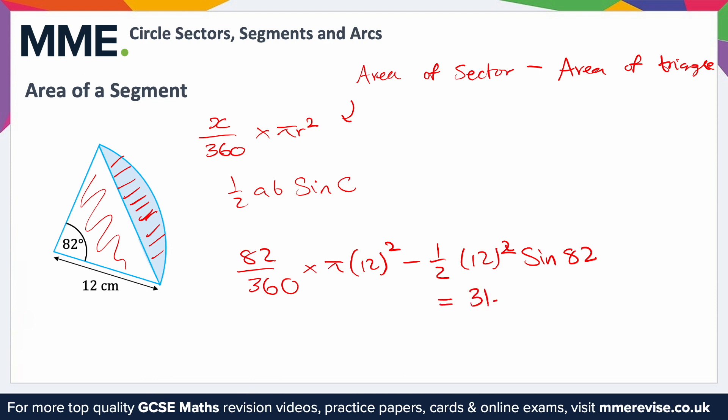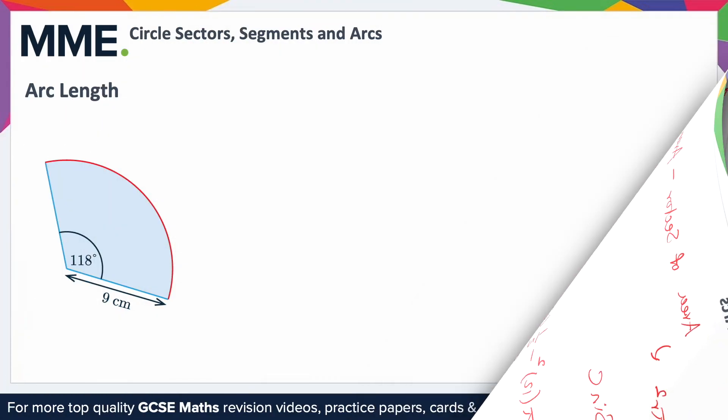Putting this all into your calculator gives you 31.74 centimeters squared. It's centimeters squared because it's an area and the radius was measured in centimeters.